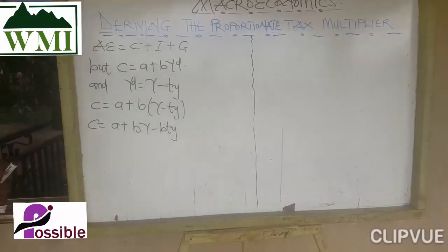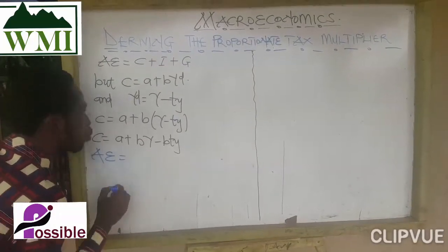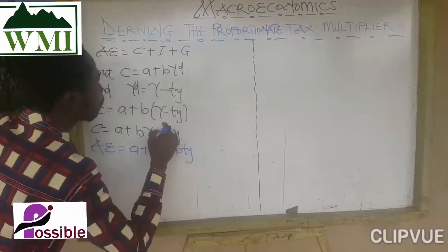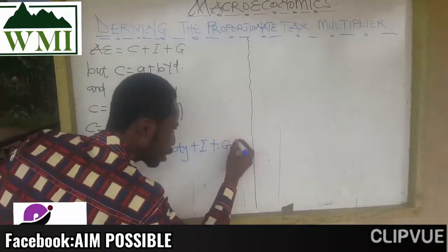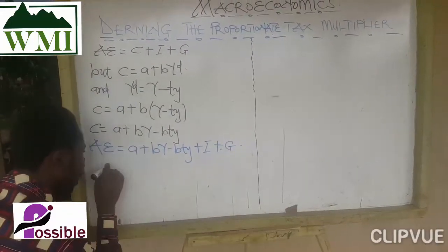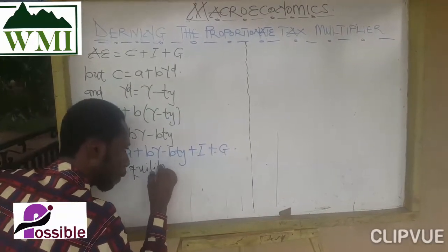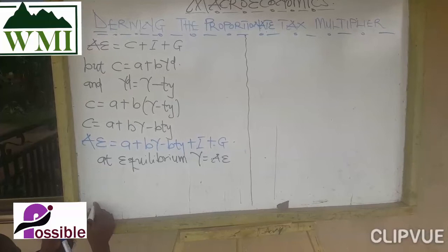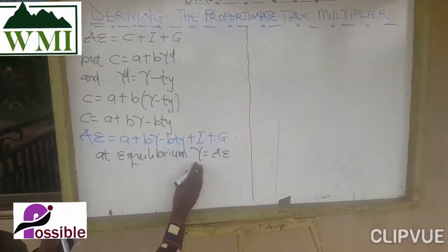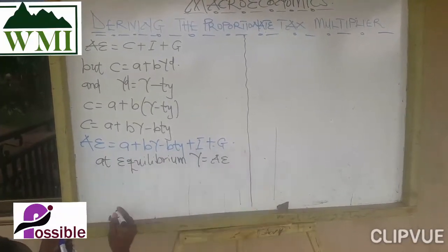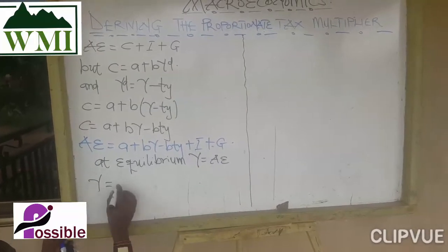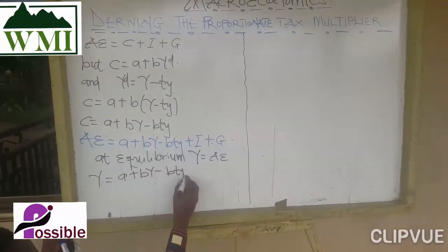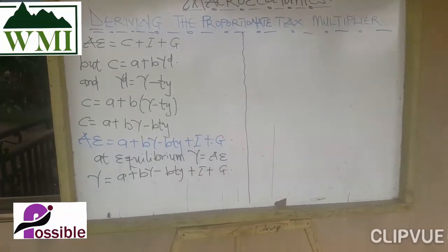Now we are going to put everything into the aggregate expenditure function. Aggregate expenditure is equal to consumption — which is A plus BY minus BtY — plus investment plus government spending. At equilibrium, output or income is equal to aggregate expenditure, so we equate Y to A plus BY minus BtY plus investment plus government spending.